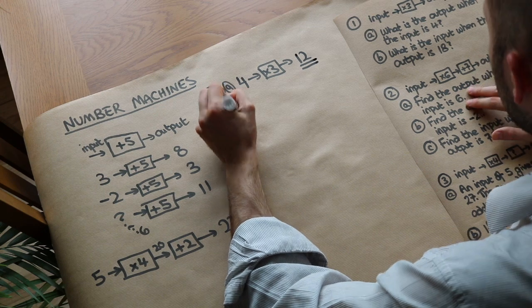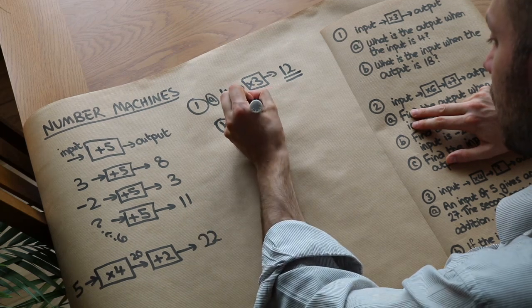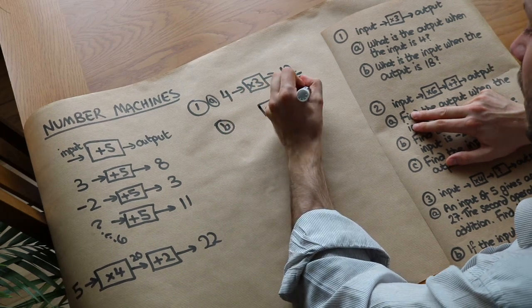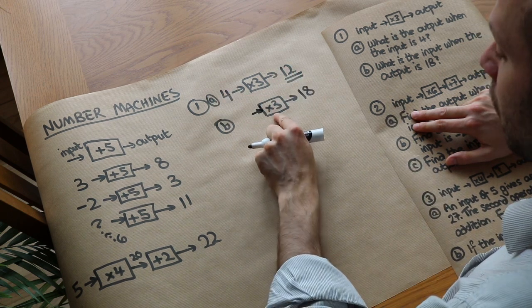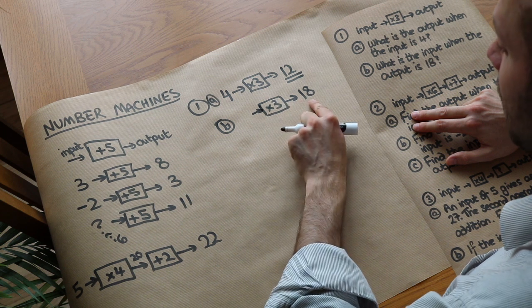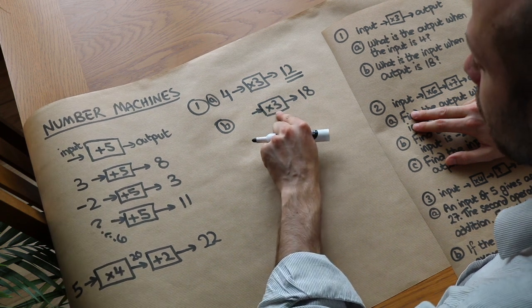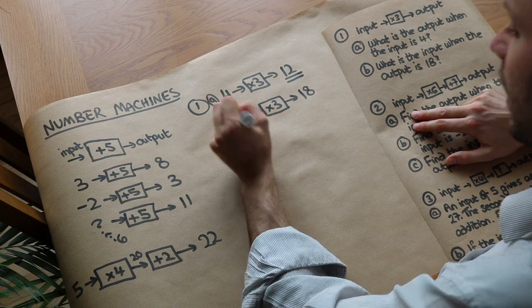What about B? What is the input when the output is 18? So this time we've got the same number machine, but now we know the output is 18. So we've got to think, well what multiplied by 3 gives you 18? Well we do the opposite. 18 divided by 3 to go backwards and that's going to give us 6. So the answer is 6.